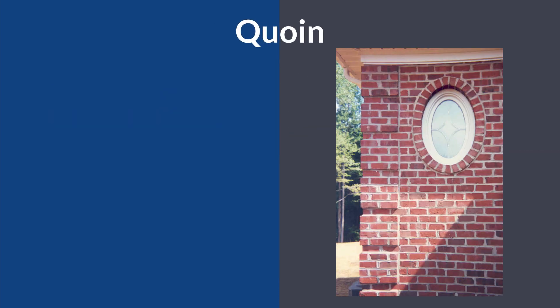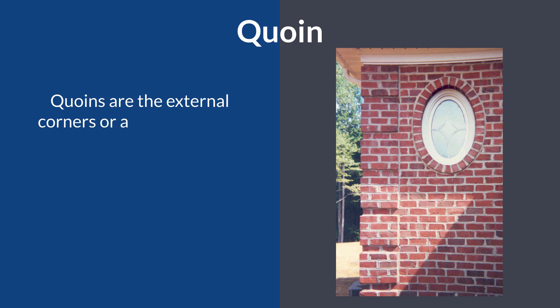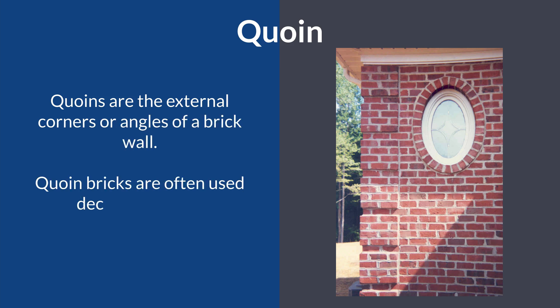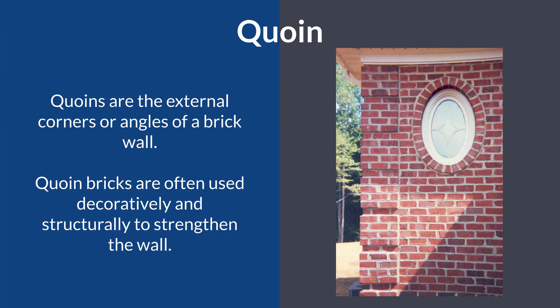6. Quoin. Spelled Q-U-O-I-N. These are external corners or angles of a brick wall. Quoin bricks are often used decoratively and structurally to strengthen the wall.